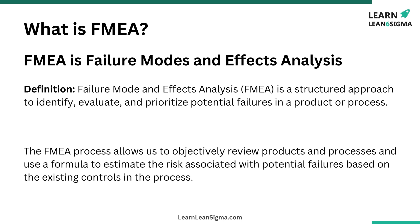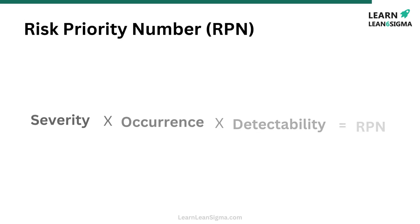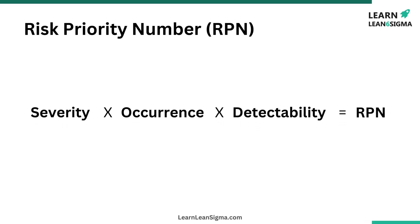These failure modes are essentially the various ways in which something can go wrong. Once identified, the FMEA process involves evaluating the effects of these potential failures to understand their impact on the overall system. This evaluation includes determining the severity of the impact, how often these failures are likely to occur, and the ability to detect them before they cause significant issues. By assigning a risk priority number, or RPN, to each potential failure mode, we can prioritize them based on their risk levels.